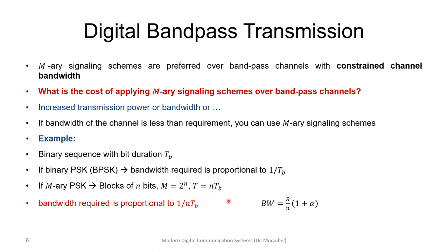In general, we can adjust the bandwidth-rate relation by the equation: Bandwidth = R·(1+α), where α is the roll-off factor and R is the symbol rate. If using the bit rate, you divide by N — Rb divided by N — which means we reduce the bandwidth requirement by a factor of N. The price is paid in power, bandwidth, or complexity.